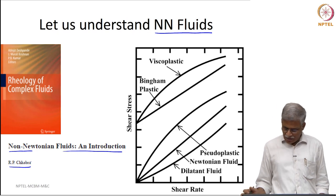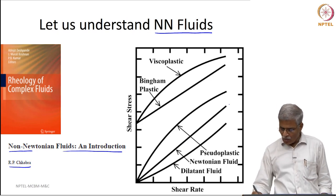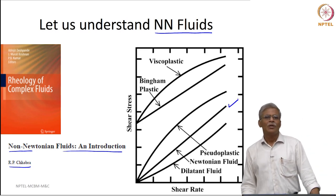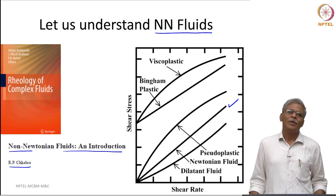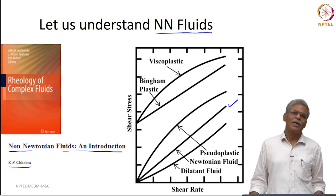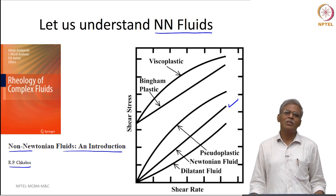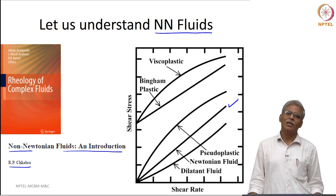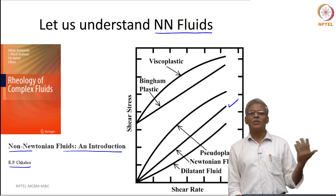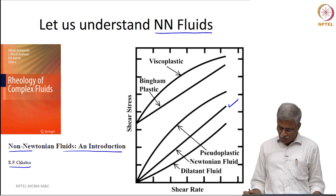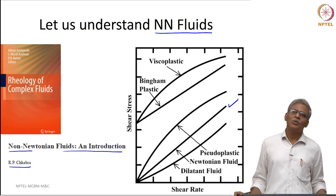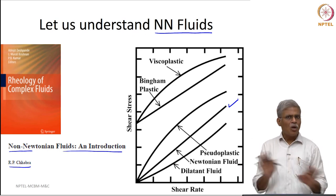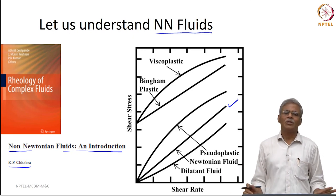On the y-axis you have shear stress and on the x-axis you have shear rate. Let us start by looking at the Newtonian fluid. The Newtonian fluid is basically defined by a shear rate independent viscosity. That means, irrespective of the shear rate, the slope of the shear stress–shear rate graph is constant, and this slope is typically taken as the Newtonian viscosity. So when we say non-Newtonian, what we really mean is anything that is not Newtonian.